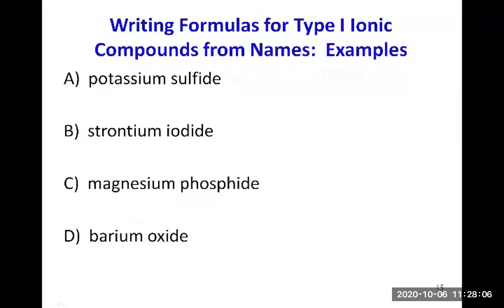This is the second video of chapter five and we will practice our first look at examples on writing formulas for type one ionic compounds from the names. So we have names and we need to find the formula.